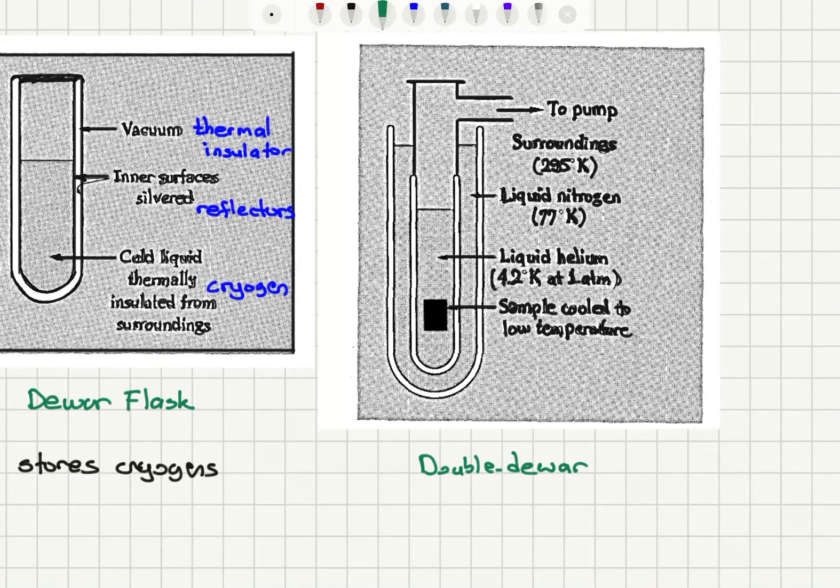So the double Dewar is based on the idea that we use two Dewars, where the jacket in between the Dewars is filled with liquid nitrogen. So that's going to be keeping, in addition to having this thermal insulator, we have a rather cold temperature cryogen that is in between the two Dewars. So you have the liquid helium inside and liquid nitrogen in between the two vacuumed jackets. And basically these jackets are vacuumed by using a pump. And the surroundings are basically at room temperature.